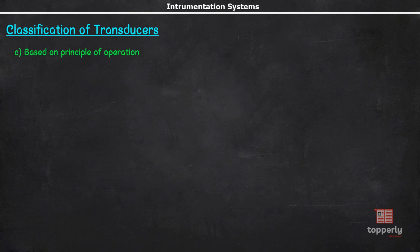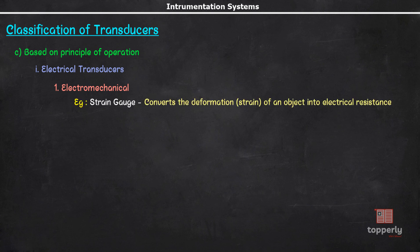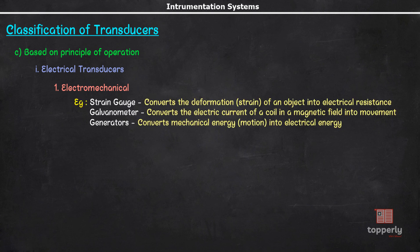Now, we will learn another way to classify transducers which is based on their principle of operation. The first class is electrical transducers. And these are again subdivided into many classes. The first one is electromechanical. Some examples of electromechanical transducers are strain gauge, galvanometer, generators, and motors.